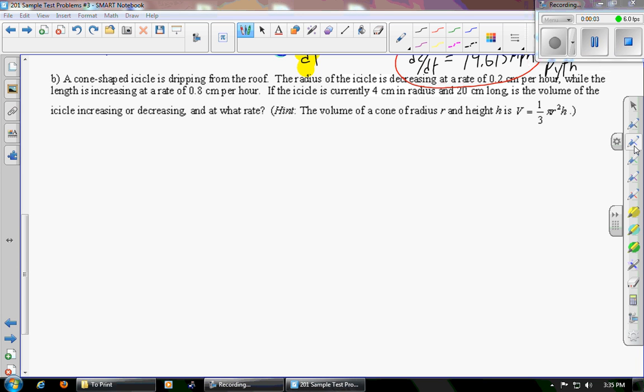This is problem 5b on the sample test problems for test number 3. A cone-shaped icicle is dripping from the roof. The radius of the icicle is decreasing at a rate of 0.2 centimeters per hour, while the length is increasing at a rate of 0.8 centimeters per hour. If the icicle is currently 4 centimeters in radius and 20 centimeters long, is the volume of the icicle increasing or decreasing, and at what rate? Hint: the volume of a cone of radius r and height h is v equals one-third pi r squared h.